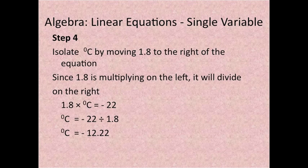Step 4: Isolate degrees centigrade by moving 1.8 to the right of the equation. Since 1.8 is multiplying on the left, it will divide on the right. 1.8 times degrees centigrade equals negative 22. Degrees centigrade equals minus 22 divided by 1.8.